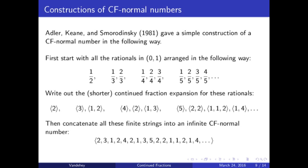The construction of Adler, Keane, and Smorodinsky starts by taking all of the rationals between 0 and 1 and arranging them in the following way. First, 1/2, then 1/3 and 2/3, then 1/4, 2/4, and 3/4, and so on.